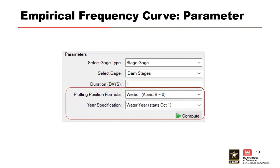The year specification can be the water year for most cases, which is the default, or the calendar year. This allows you to define the beginning and ending date for the analysis. Make sure to choose a year specification that captures all the flood events for that time period. If the flood season typically occurs in spring and summer, a calendar year starting January 1st could be sufficient. However, if the flood season occurs in fall and winter, a water year starting October 1st and ending September 30th might better capture those events. Water years are typically what we use in most regions of the country for hydrology.